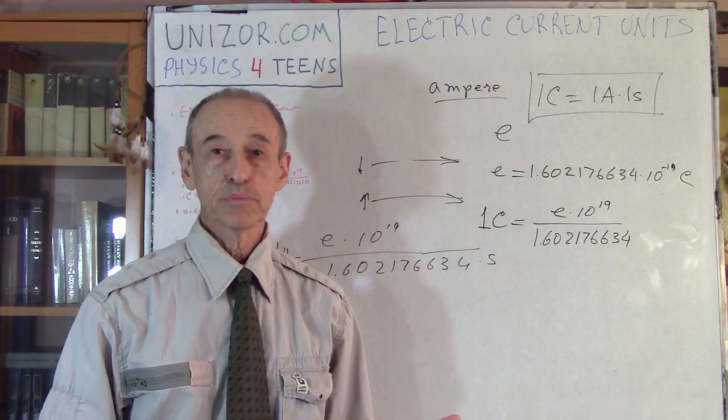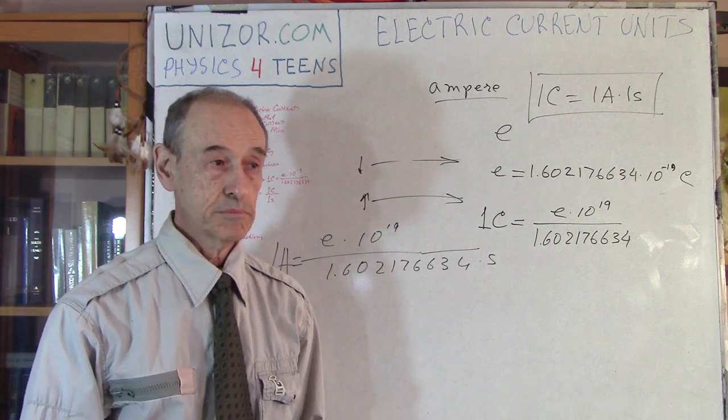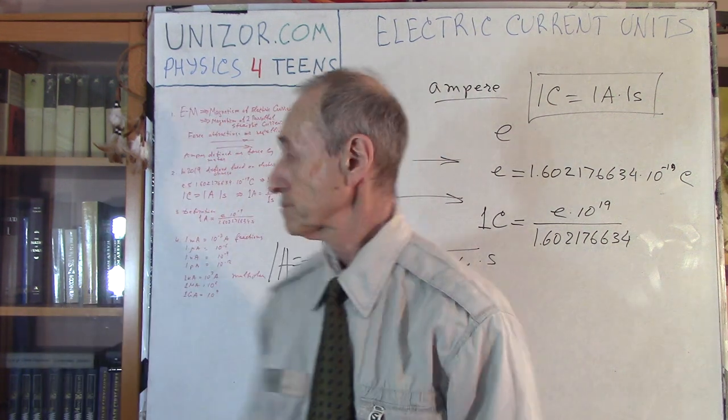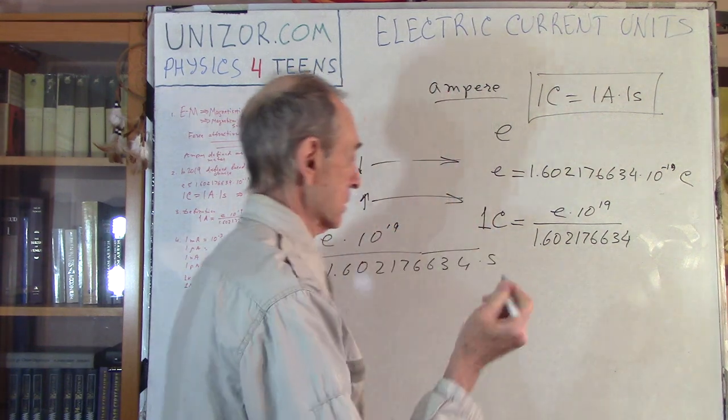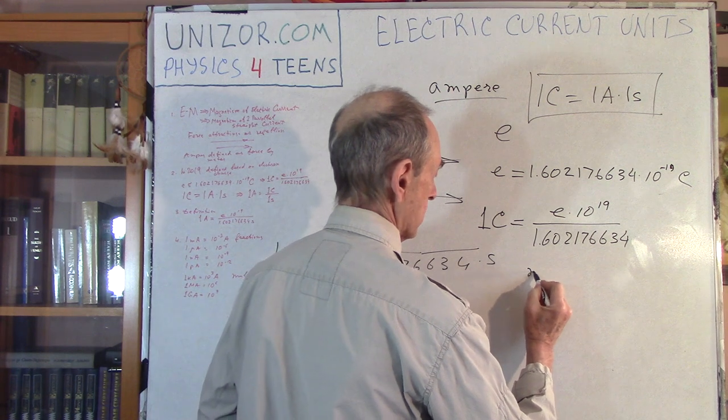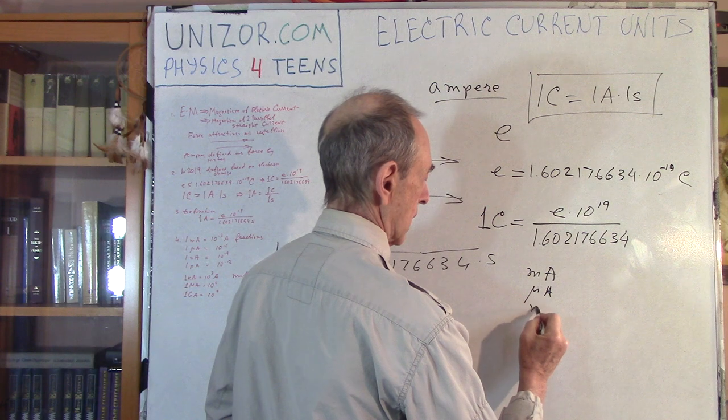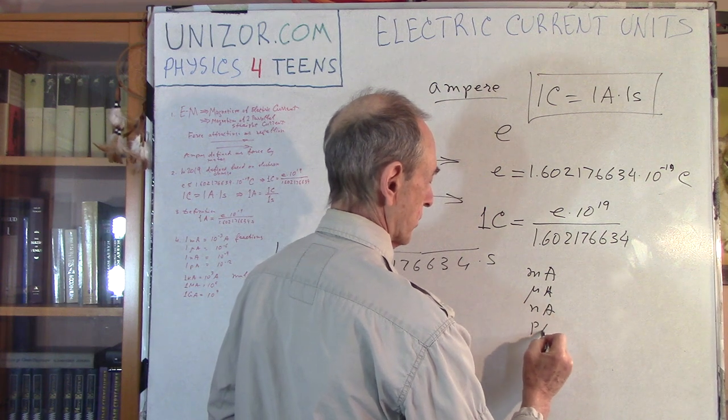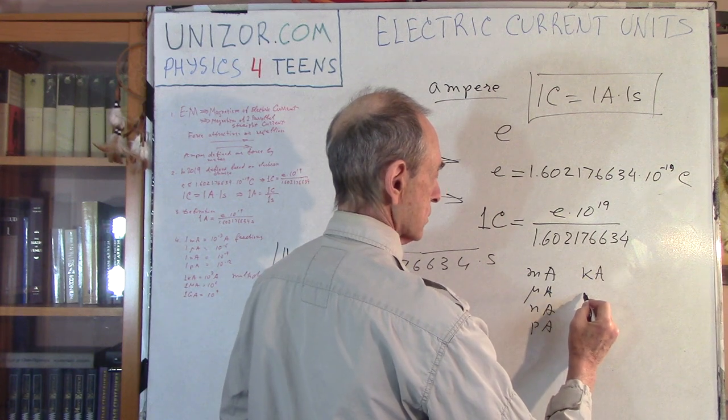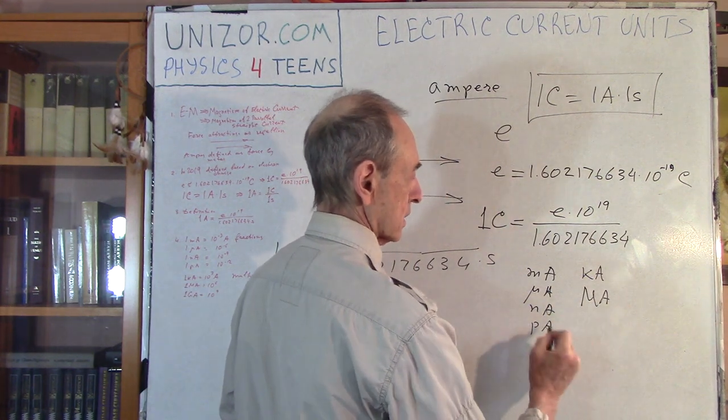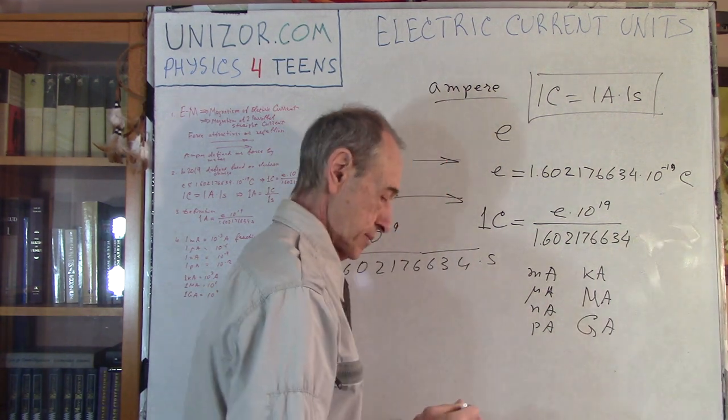Obviously, the multiples are kiloampere, which is one thousand ampere, megaampere. The abbreviations, milliampere, microampere, nanoampere, and picoampere, that's fractions. Kiloampere is one thousand, megaampere, capital letter M, and gigaampere, that's million of ampere.